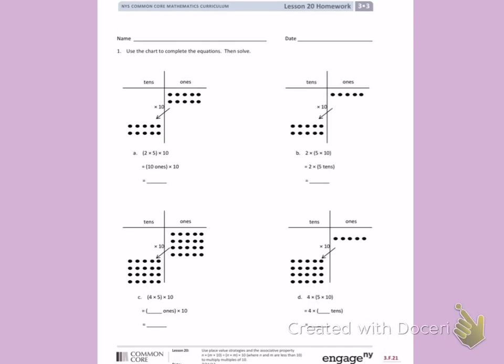Today's objective was to use place value strategies and the associative property n times m times 10 equals n times n times 10, where n and m are less than 10, to multiply multiples of 10.